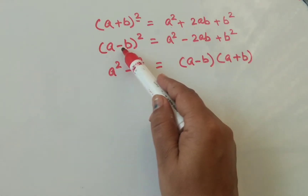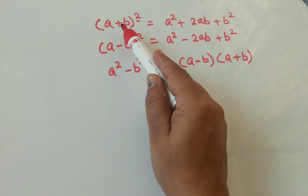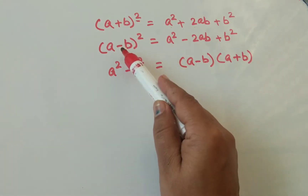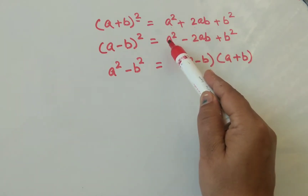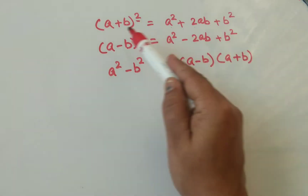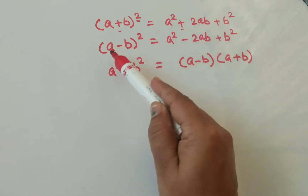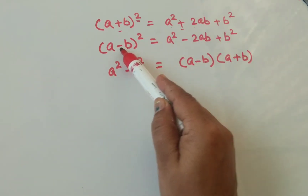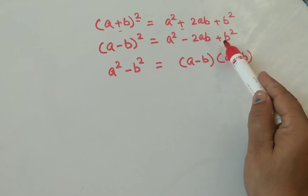Similarly, the second identity is (a - b) whole square. In the first identity we were using the addition symbol. Here the symbol is subtraction. So the formula will also change accordingly. a square and b square — both terms remain the same in both identities. If the sign between the two numbers is addition, then we apply plus before the 2. If the sign is subtraction, then we also apply the subtraction sign before the 2.